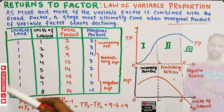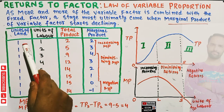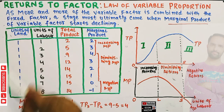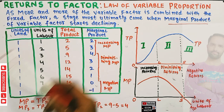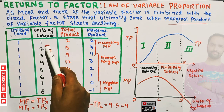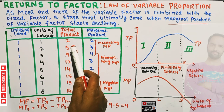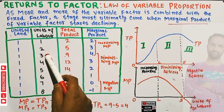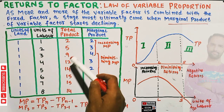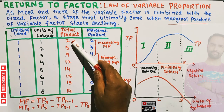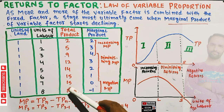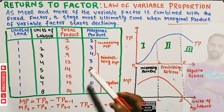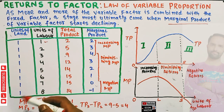Here we have units of land which is fixed — let us say one plot of land. We have units of labor. When we employ one laborer, our total product is two units of output. When we employ two laborers, our total product increases to five. Similarly, as we increase the units of laborers, our total product initially increases at an increasing rate, then at a decreasing rate, and ultimately becomes negative.